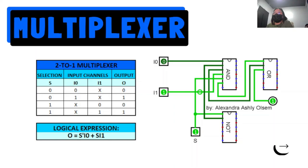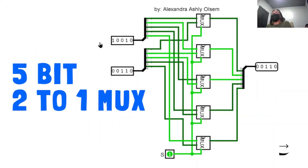We also have created a 5-bit 2 to 1 multiplexer. So we use the IC of this one, the integrated circuit, and copy pasted five since it's a 5-bit and replaced.